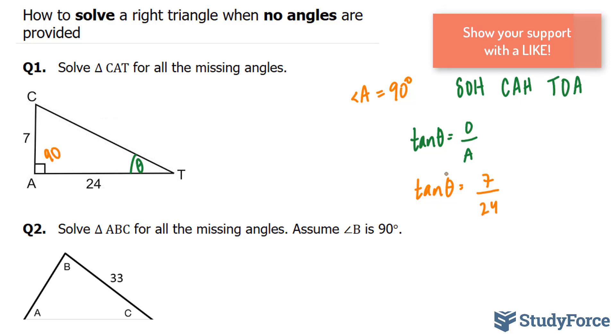Now, remember, this A represents adjacent, and that's adjacent. So we have tangent theta is equal to 7 over 24. To find out what your theta is, you have to take the inverse tangent function.